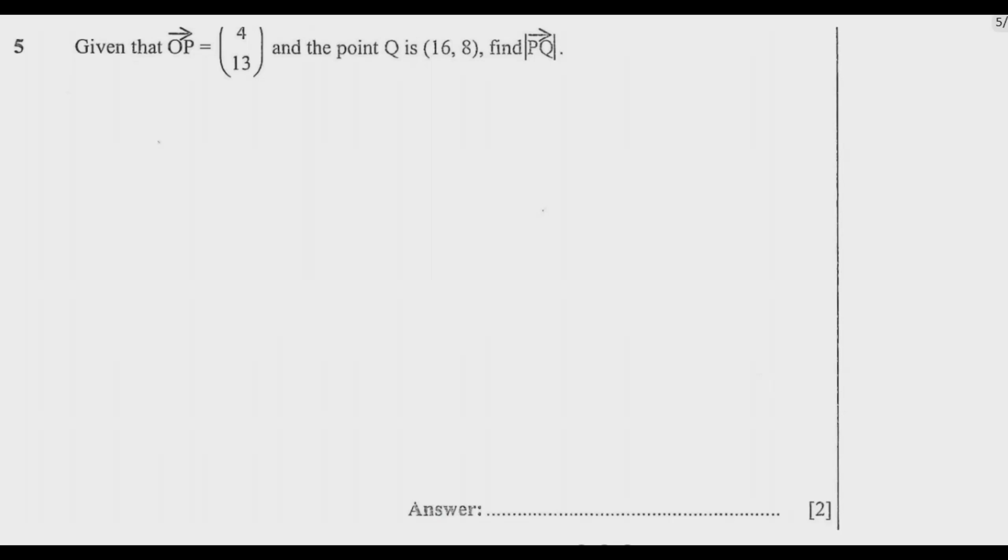So let us look at question 5 in detail. Given that vector OP is equal to column vector (4, 13) and the point Q is (16, 8), find the magnitude of vector PQ. So we are looking for the magnitude of vector PQ, that's what we are looking for.